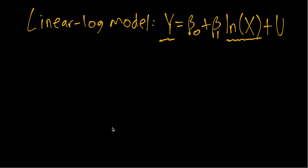There's an approximate interpretation of this beta 1 slope coefficient and then there's an exact interpretation. In this case, how good the approximation is depends on how much X is changing. It does not depend on how big beta 1 is. So that's a difference with the log linear model.